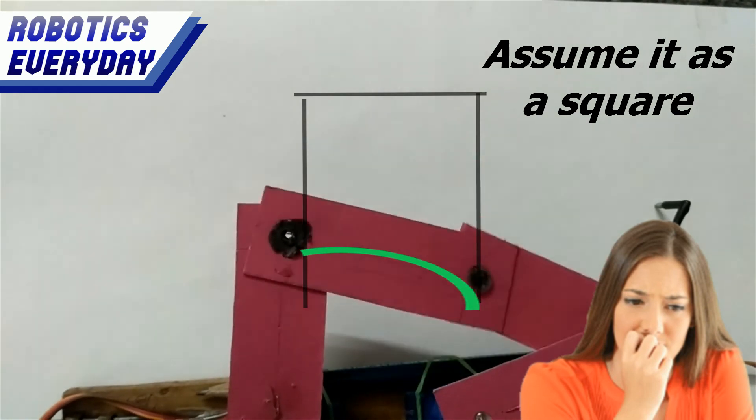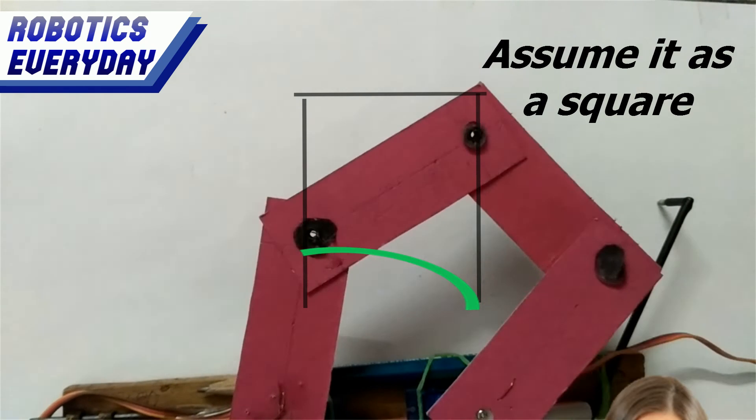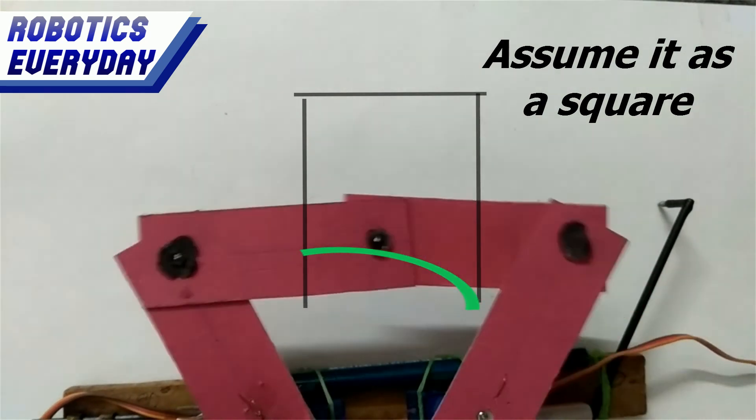Now let's trace a square shape with this robot. This robot can draw or trace anything. The only limit is the code. In the follow-up videos, we are going to explore its capabilities.